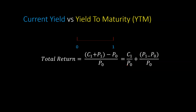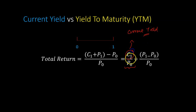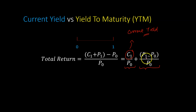It turns out that the portion C1 over P0 is what we refer to as a bond's current yield. Current yield is nothing but the fraction of the total return that you're looking to make from a bond investment in the form of coupon payments. The other thing that influences your total return is the percentage change in price that happens over the course of one year.